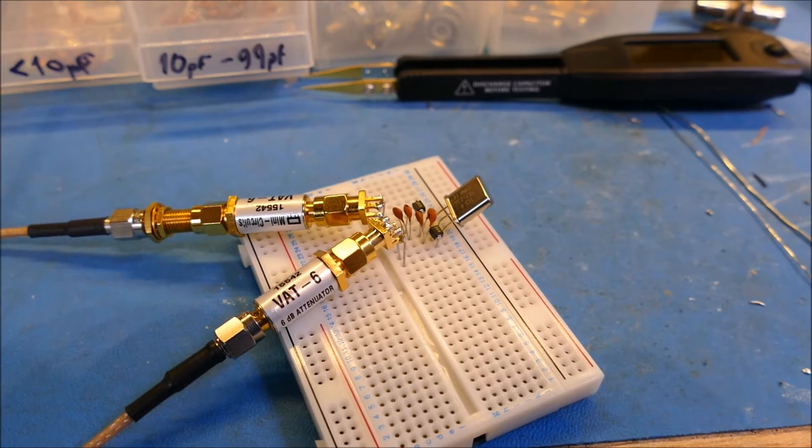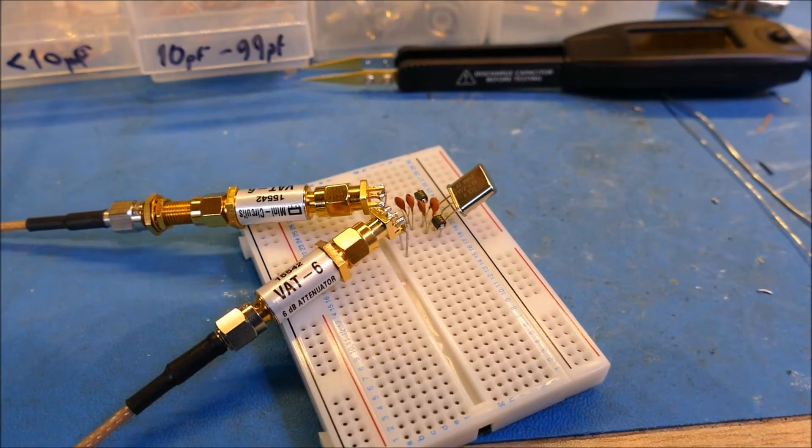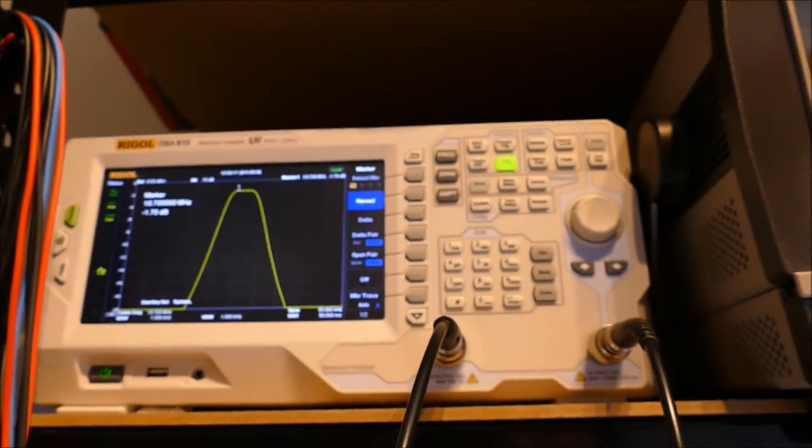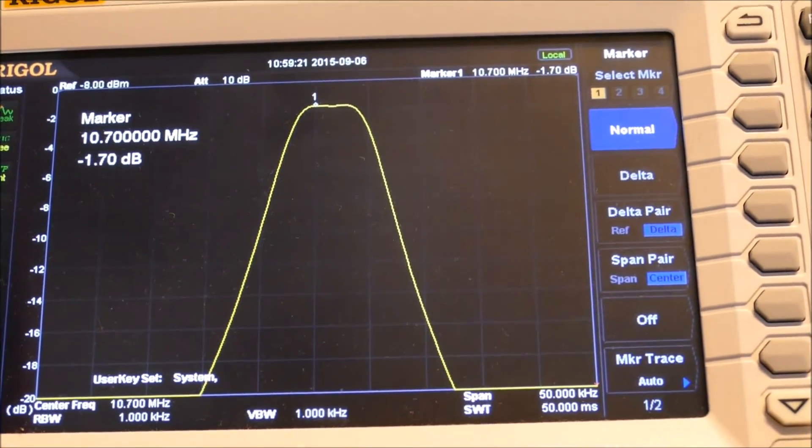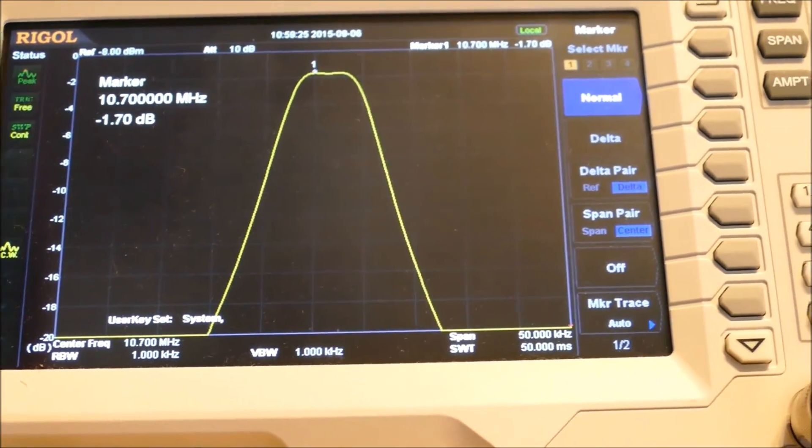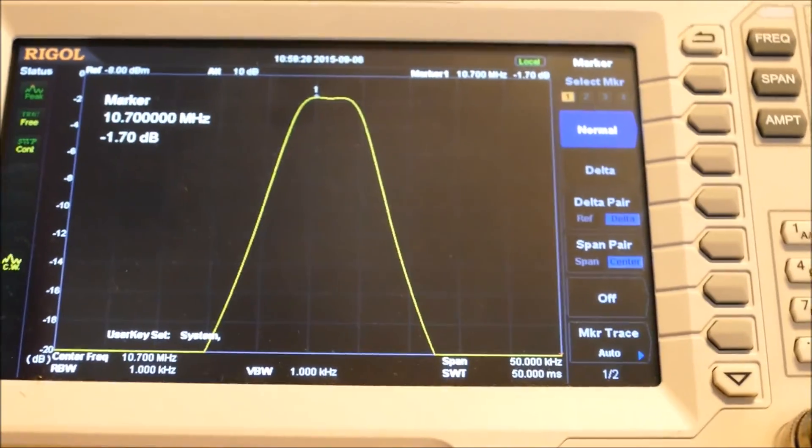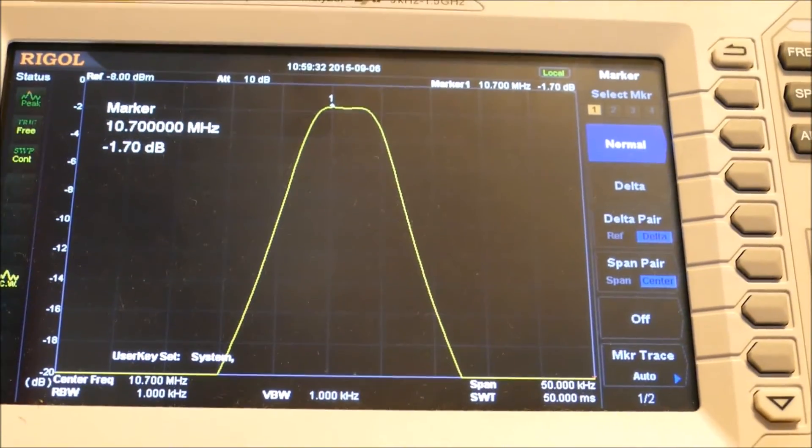If we go up here, this is the trace again on the DSA 815. You'll see it's offset from the center by about 1.6 kilohertz.